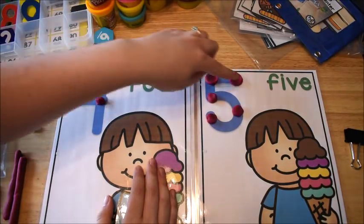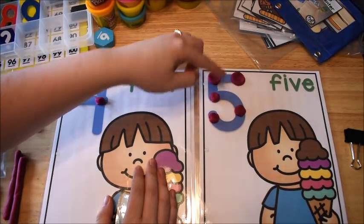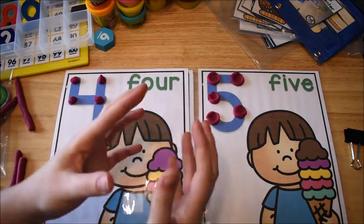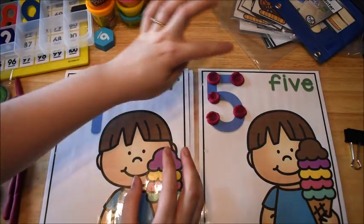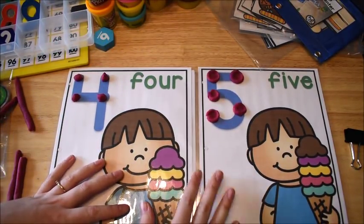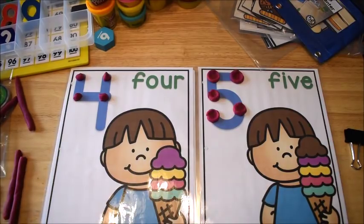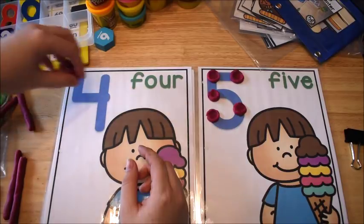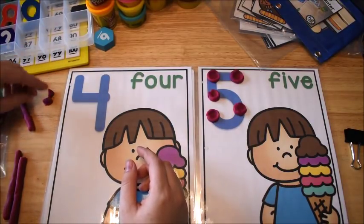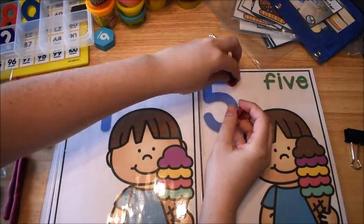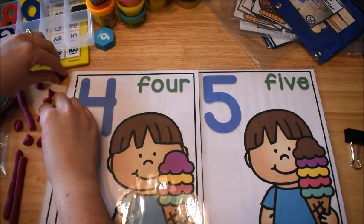You can have them squish them if you want as they're counting. So we have four, five, six, seven, eight, nine. Some kids need that much of a physical representation as they're counting, and that is totally fine. So whatever works for your students, that's what you do.